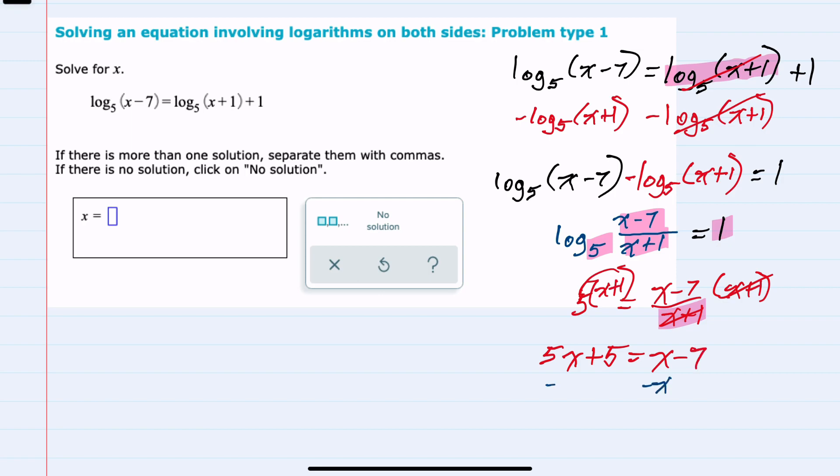Moving the x's to one side, we have 4x plus 5 equals negative 7. Subtracting the 5 to isolate the x, we have 4x equals negative 12. We continue to isolate the x by dividing both sides by 4, and we have a potential solution of x equals negative 3.